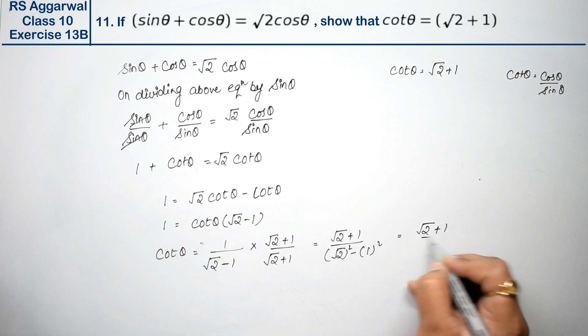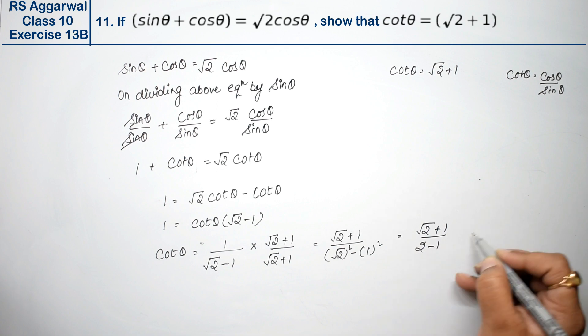This is root 2 plus 1 upon 2 minus 1. So we can write root 2 plus 1.